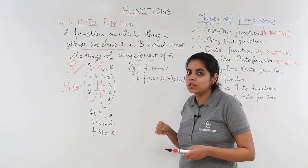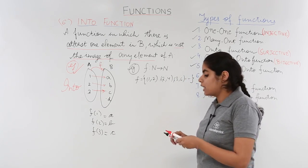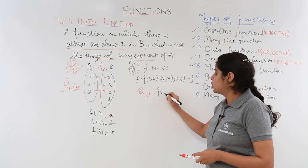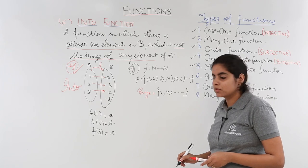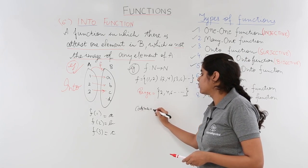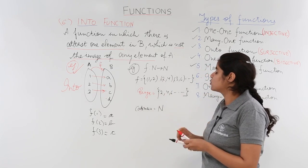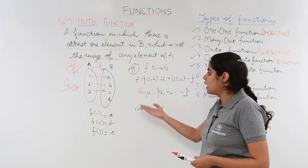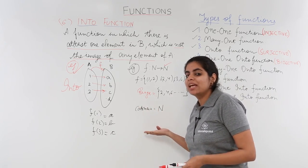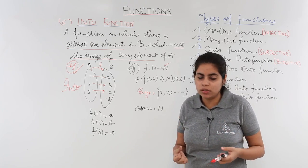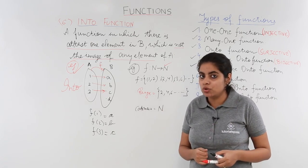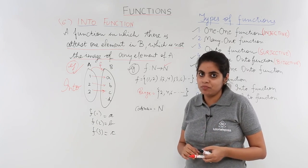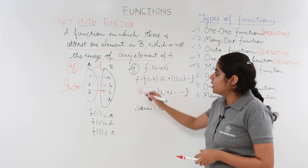Now let's look at it more closely. The range here is 2, 4, 6, and so on — that is, only the even natural numbers. Whereas the co-domain is all natural numbers, as you can see here. Is the co-domain equal to the range? No. In fact, the range here is a subset of the co-domain. That means there are some elements left out which are not the images of any element, or in other words, there are some elements that do not have any pre-image. Hence, this is an example of an into function again.